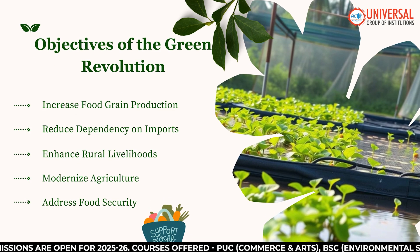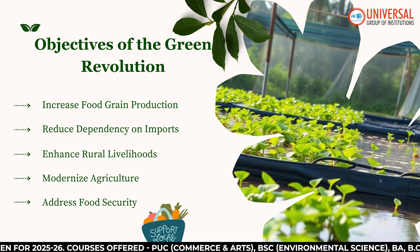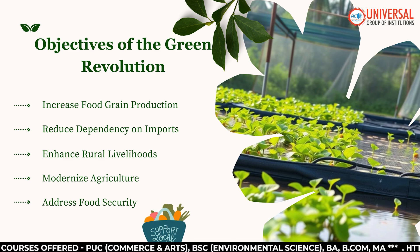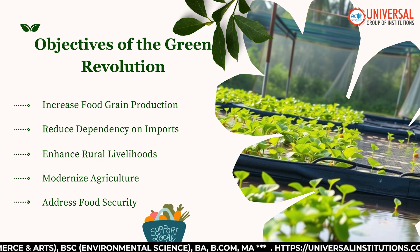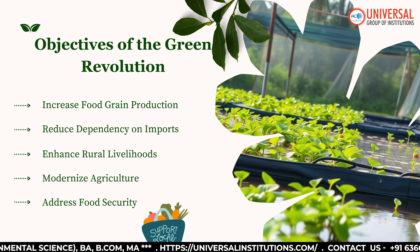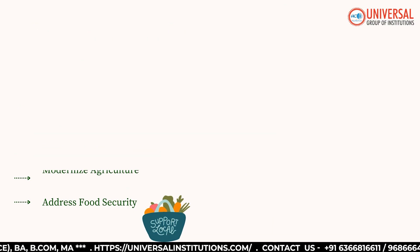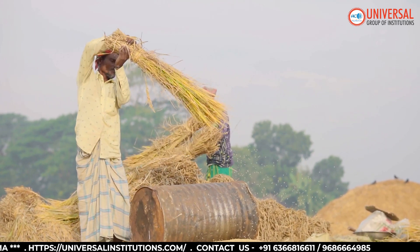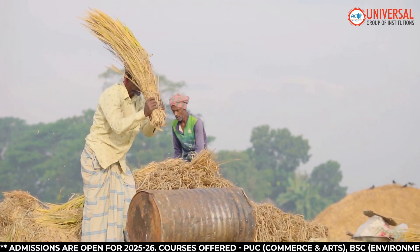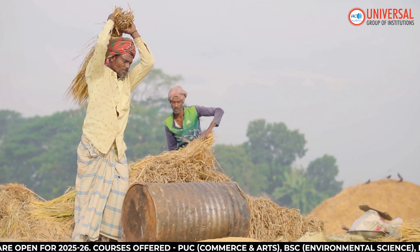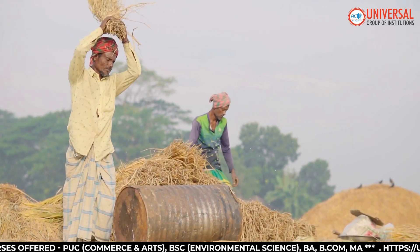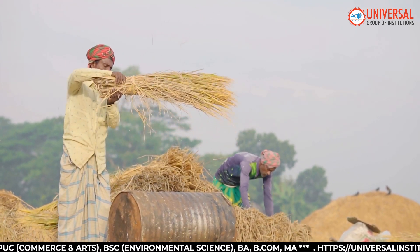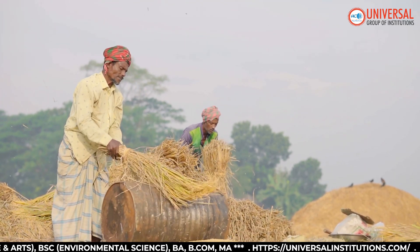Why did India need the Green Revolution? Majorly for increased food grain production. When a country cannot produce enough food for its people, it leads to hunger, malnutrition, and dependency on other nations. The primary objective of the Green Revolution was to increase food grain production, particularly wheat and rice — staple crops for the majority of India's population. During the 1950s and 1960s, India depended heavily on food aid, especially through programs like PL 480 from the United States.